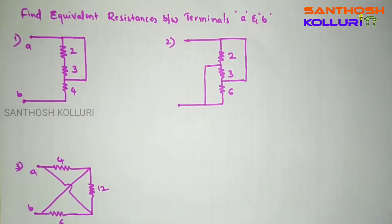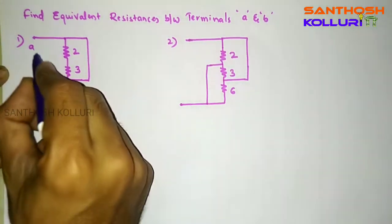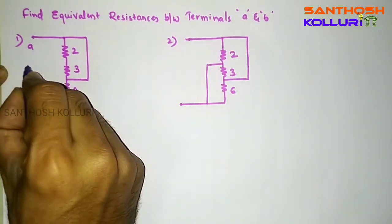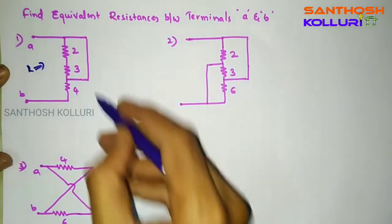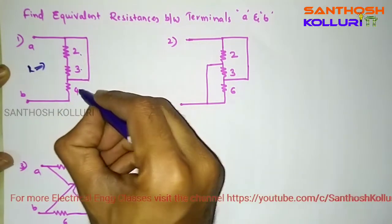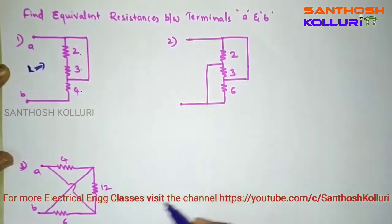We will calculate equivalent resistance values between the terminals A and B. For the first question, we need to find the equivalent value of resistor between terminals A and B. We are having resistance values 2, 3, and 4 ohms connected as shown in the figure.